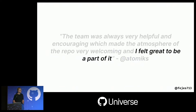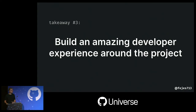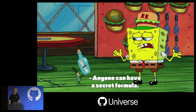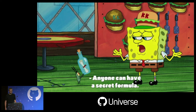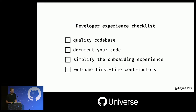That quote from Atomics is specifically the part I really like, and for me this is what open source should be like. It's not really a secret how we can get there — the way is to build an amazing developer experience around the project. Today I'm going to share some tips and tricks I found really useful, starting with my little checklist covering code quality.